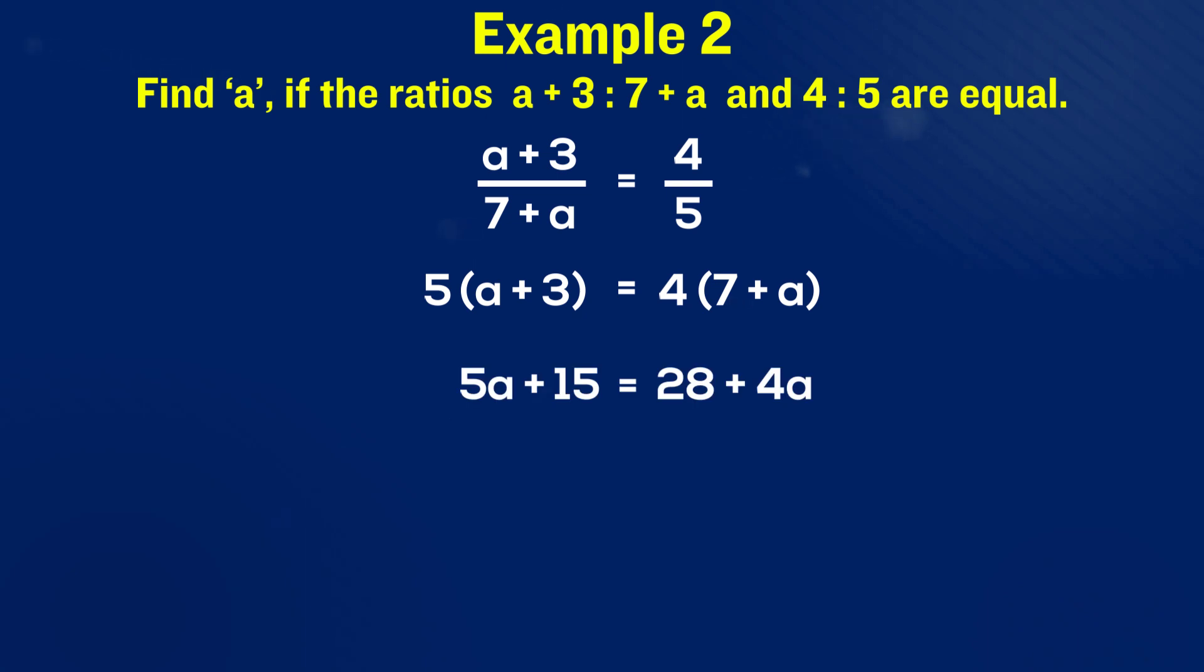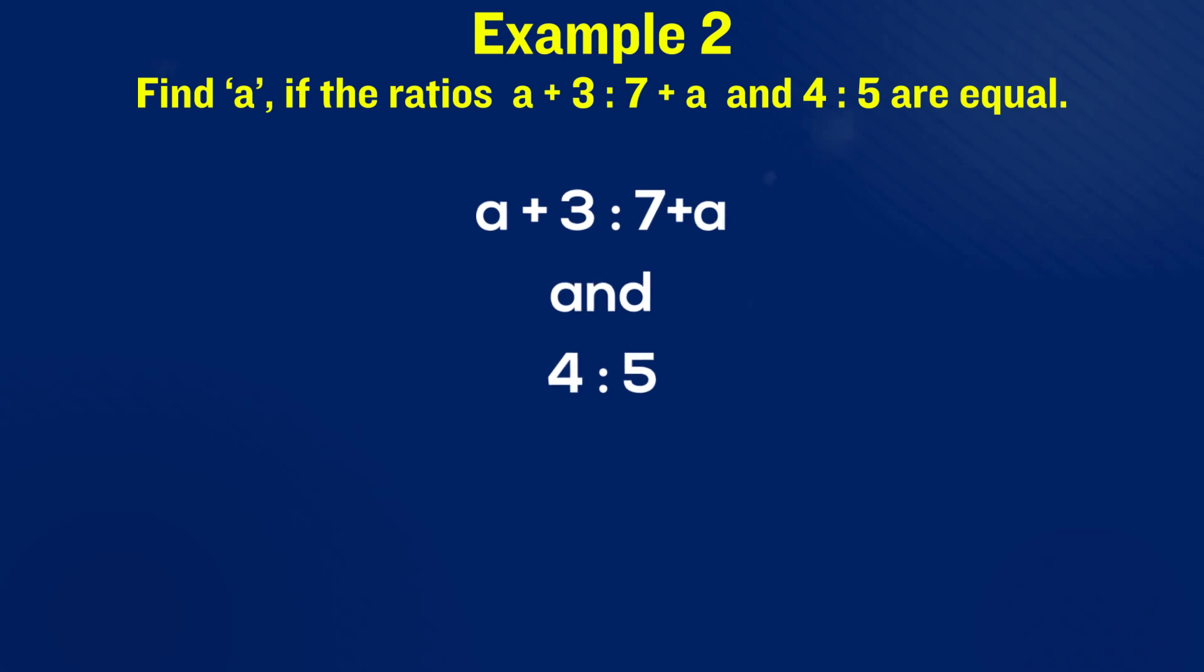We need to simplify it further to isolate 'a'. For that, shift the like terms to one side. You'll get 5a - 4a = 28 - 15. Solve this and you'll have the value of the unknown a = 13. Now we know that the given ratios can be equal if a is equal to 13.